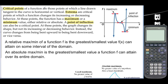Critical points of a function are those points at which a line drawn tangent to the curve is horizontal or vertical. Extrema are critical points at which a function changes its increasing or decreasing behavior. At these points, the function has a maximum or a minimum value, either relative or absolute. A point of inflection can also be a critical point — at these points, the graph changes its shape but not its increasing or decreasing behavior. The curve changes from being bent upward to being bent downward, or vice versa.